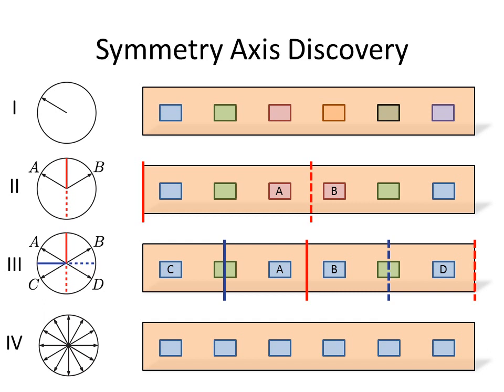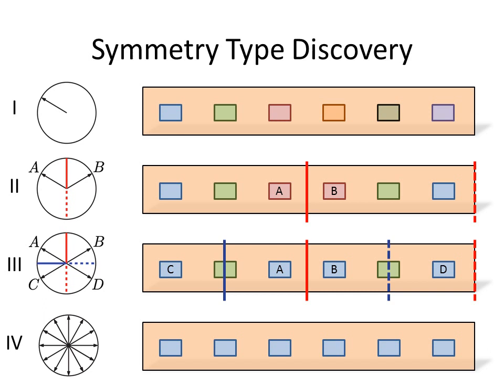For type 2 and type 3 symmetry, we need to discover the symmetry axis in each iteration of the algorithm. To do this, we exhaustively search for the symmetry axis that maximizes the joint confidence from our viewpoint classifiers. The search space is smaller for type 3 because we assume that the two symmetry axes are perpendicular to each other. To determine the symmetry type, we simply use cross-validation to pick the symmetry type with the best performance.